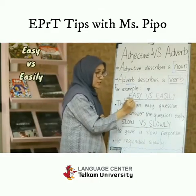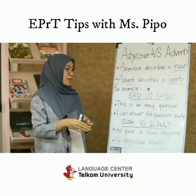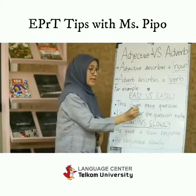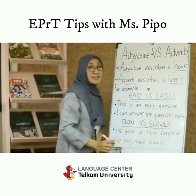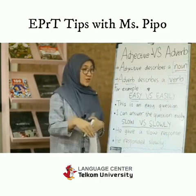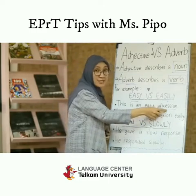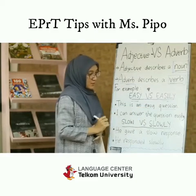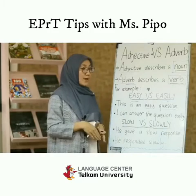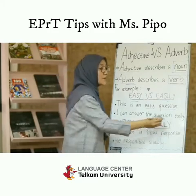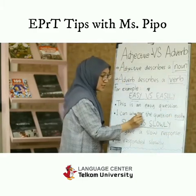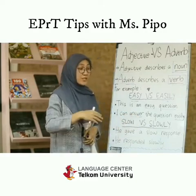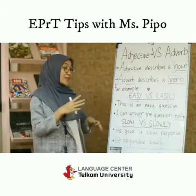Let's look at examples: 'easy' versus 'easily.' Easy is an adjective and easily is an adverb. For example: 'This is an easy question.' Easy is an adjective because question is a noun. But in 'I can answer the question easily,' we use easily because answer is a verb, so it is described by an adverb.